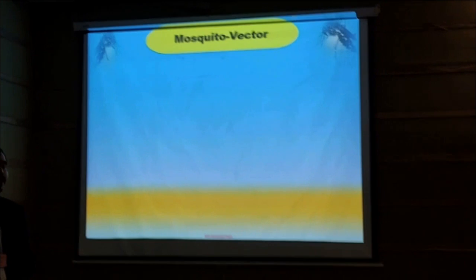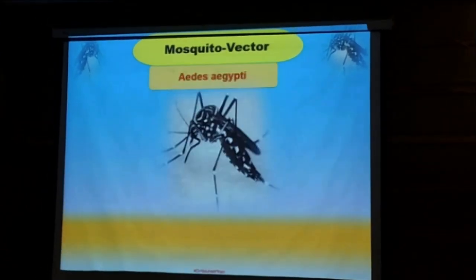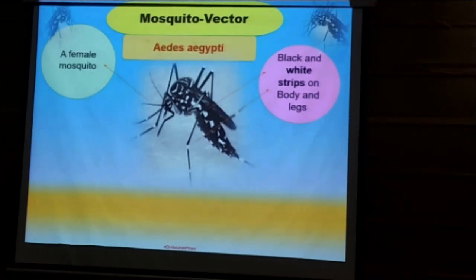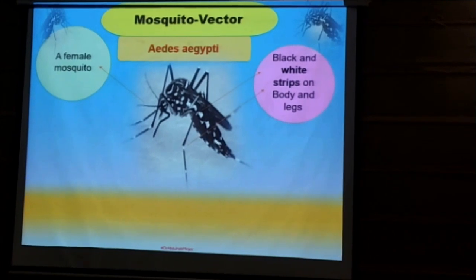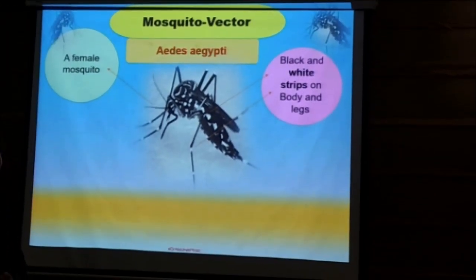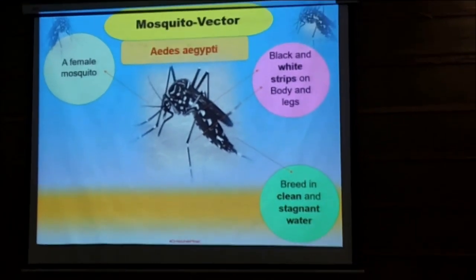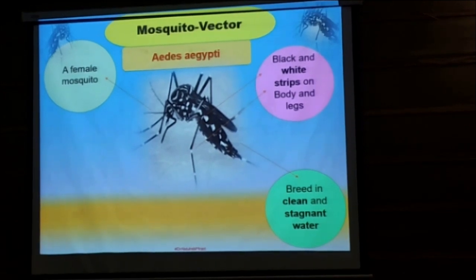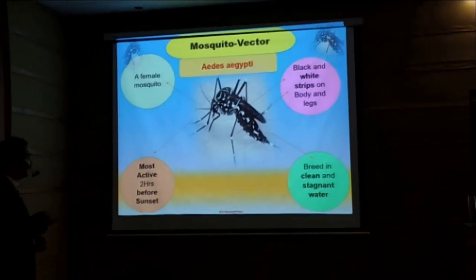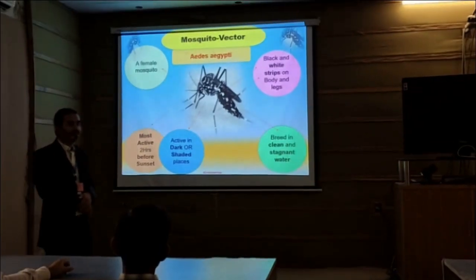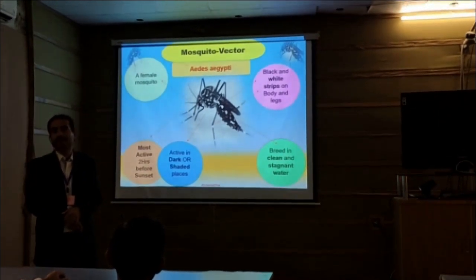This disease is transmitted through a mosquito vector. So we should know about the mosquito vector and its different characteristics. The Aedes aegypti is a female mosquito, and there are black and white stripes on the body and legs. These black and white markings are the identification features of this mosquito, and also its size and other characteristics differentiate it from other mosquitoes. They have a large size. Also, they breed in clean and stagnant water — even clean water found openly in our homes — so they can also breed in that water. This mosquito is most active two hours before sunset, and active in dark or shaded places.